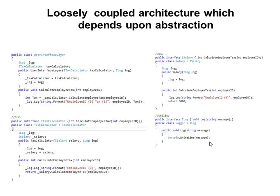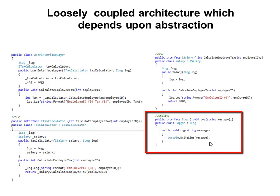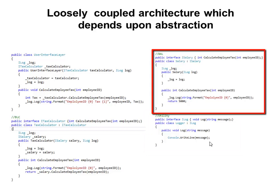Now we will change the tightly coupled architecture to a loosely coupled architecture. Starting with the logger class: previously it was a static class with a static method. In this example, we changed it to an instance class. We define an interface called iLog with one method called Log that takes a string as an input parameter. The Logger class now implements iLog. We also created an interface called iSalary, which defines one method called CalculateEmployeeTax taking an employee ID as an integer input parameter.